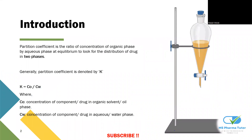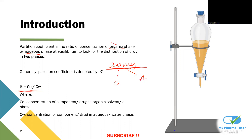Now, introducing partition coefficient: it is basically the ratio of the concentration of organic and aqueous phases, to see how much amount of drug is distributed in these two phases. For example, if you are taking 20 mg of drug, you want to see how much of that drug is getting dissolved in the organic phase and in the aqueous phase. For that, we need to do partition coefficient — to determine once you get the partition coefficient, whether it has a lipophilic character or a hydrophilic character.